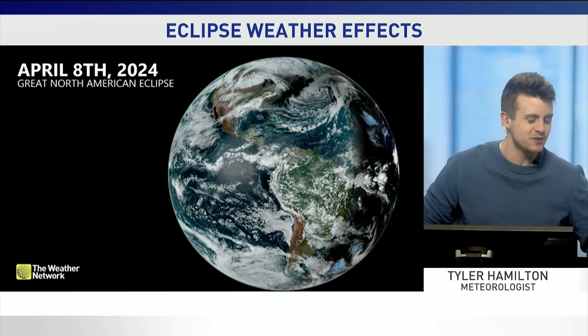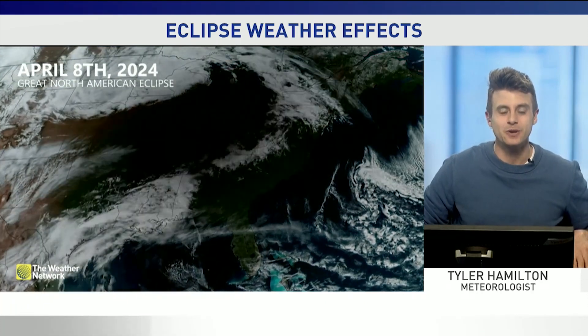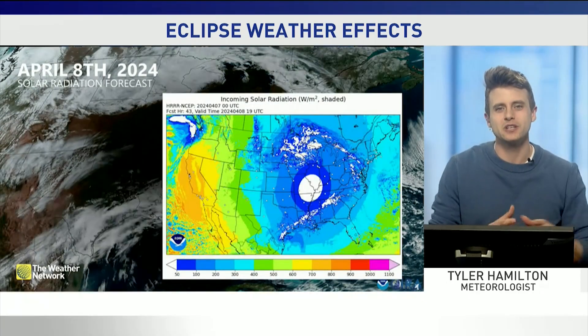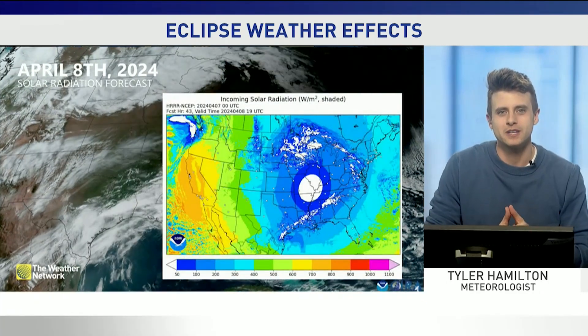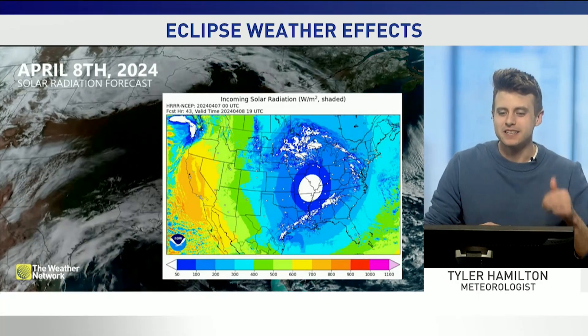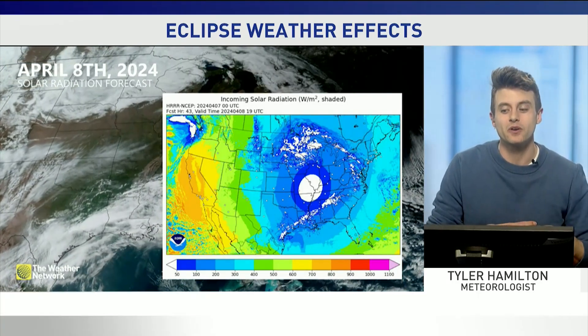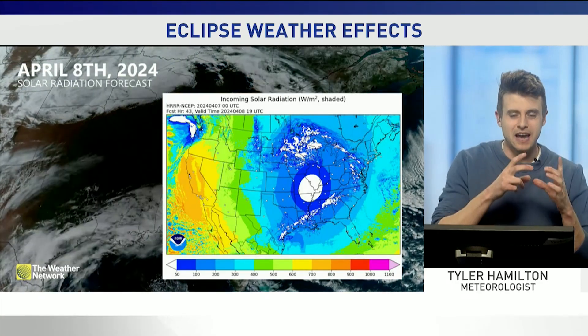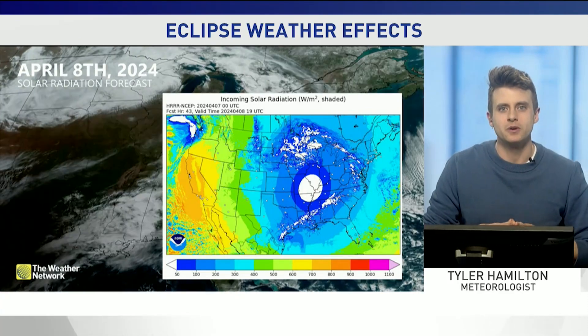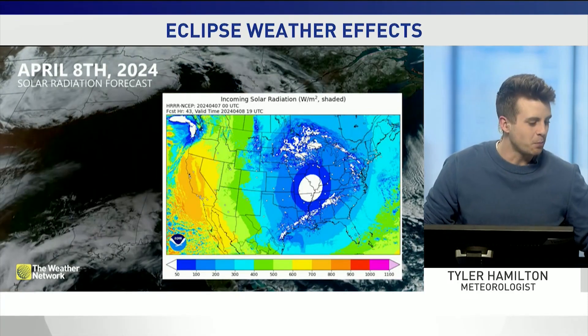There's the umbra traversing parts of North America, really plunging southern Ontario into near darkness. Our highest resolution computer models actually have this parameter baked in — it's called the incoming solar radiation, and you can see that bullseye there where it essentially drops to zero percent.